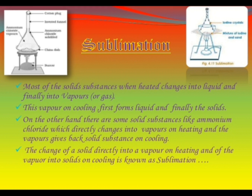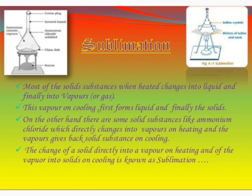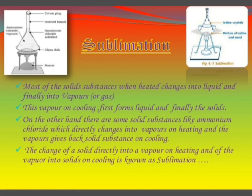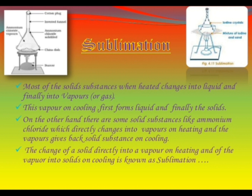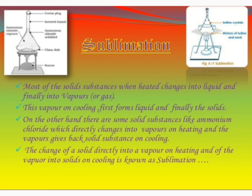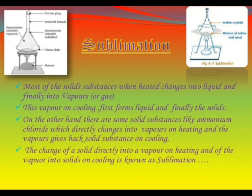Substances like ammonium chloride, iodine, camphor, naphthalene, and anthracene sublime on heating and can be recovered as sublimate by cooling their vapors. Most solid substances do not undergo sublimation — for example, common salt, sand, sulphur, and chalk do not sublime on heating. The process of sublimation is used to separate only that component of a solid-solid mixture which sublimes on heating.